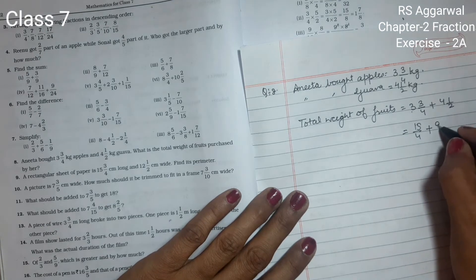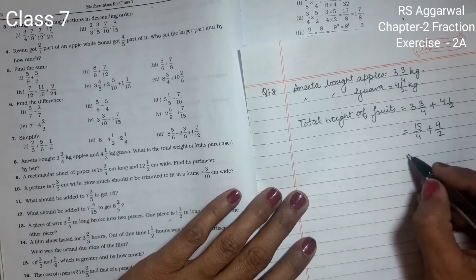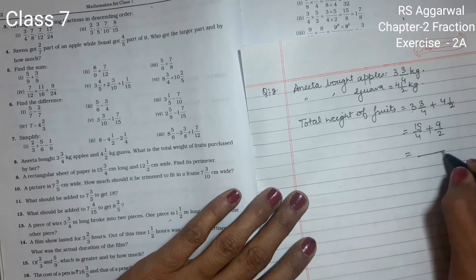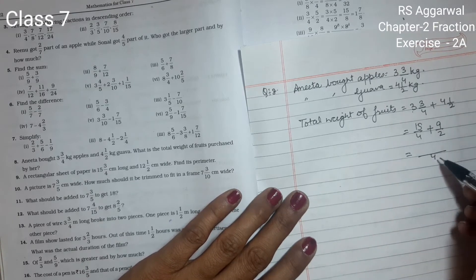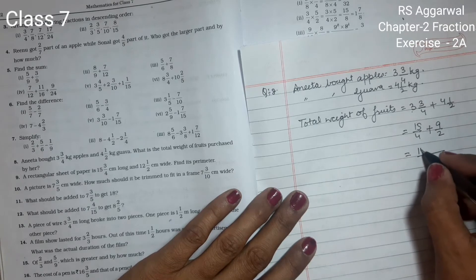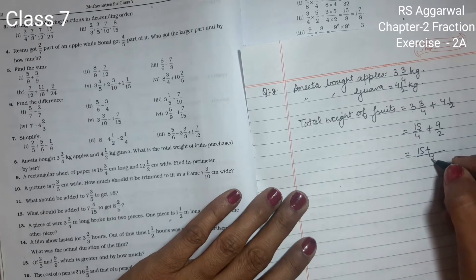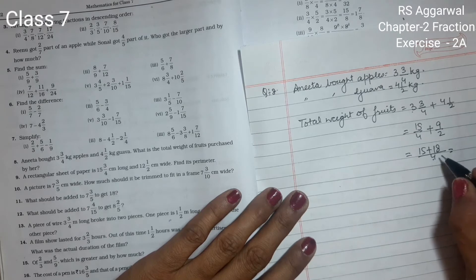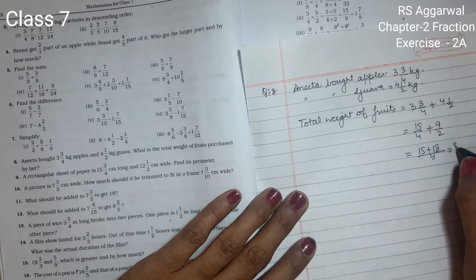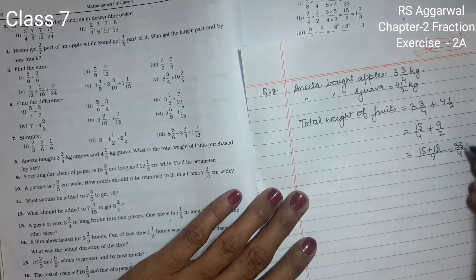The common denominator for 4 and 2 is 4. So 4×1 is 4, 1×15 is 15, 2×2 is 4, 2×9 is 18. Now 15 plus 18 is 33 upon 4.